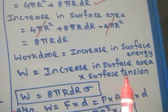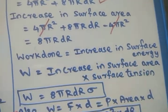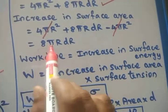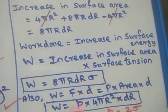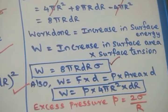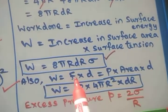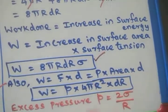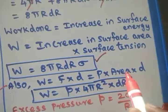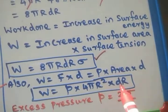Work is equal to force into displacement. The force here is surface tension multiplied by the increase in surface area, which is 8 pi R dr, and the surface tension is sigma. Similarly, the work done can also be written as pressure into area into distance. There is excess pressure P inside the drop, so work equals P into 4 pi R squared into dr.